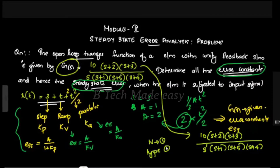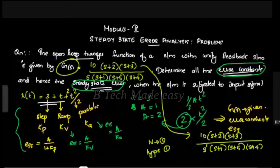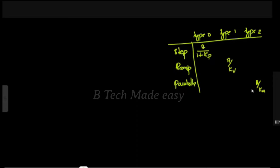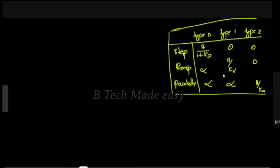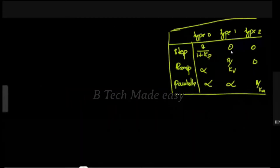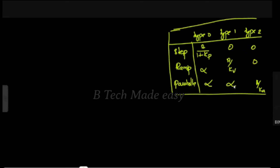We will use a chart to look up the error constants. The chart covers Type 0, Type 1, and Type 2 systems, with corresponding entries for ESS1, ESS2, and ESS3 values for each system type.